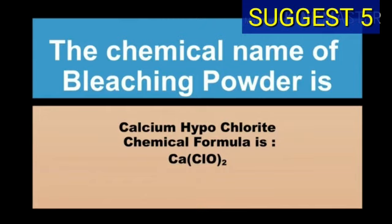The chemical name of bleaching powder is calcium hypochlorite and chemical formula of bleaching powder is Ca(ClO)2.